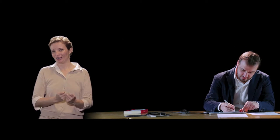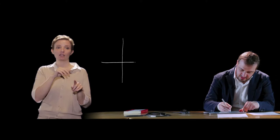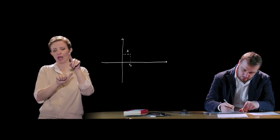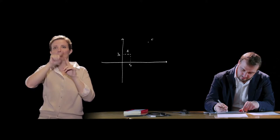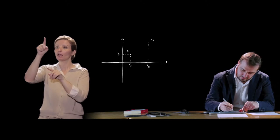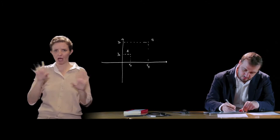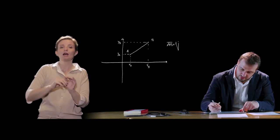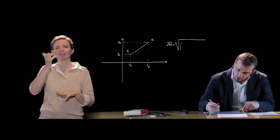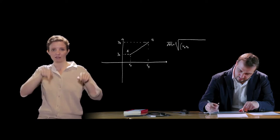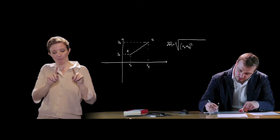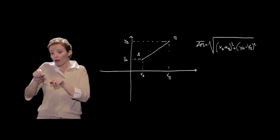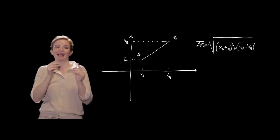Più in generale, qualora i due punti abbiano sia ascissa che ordinata differenti — il punto A di coordinate xA, yA e il punto B di coordinate xB, yB — la distanza AB nel piano cartesiano è ricavabile utilizzando il teorema di Pitagora: si calcola come la radice quadrata della somma del quadrato della differenza delle ascisse e del quadrato della differenza delle ordinate dei due punti.